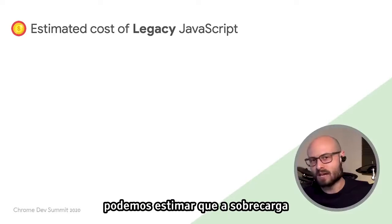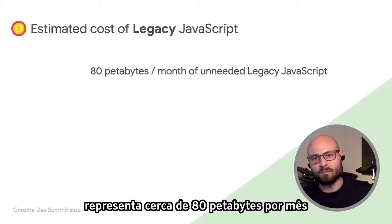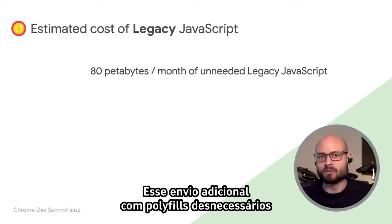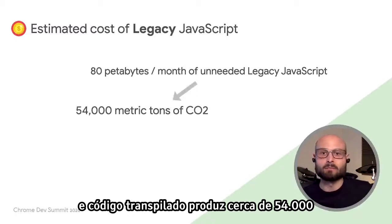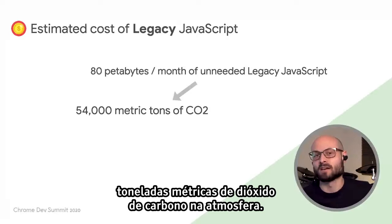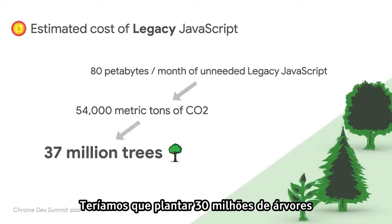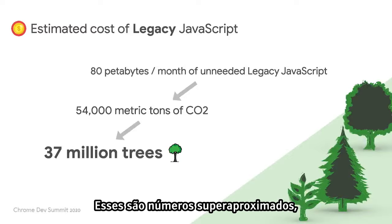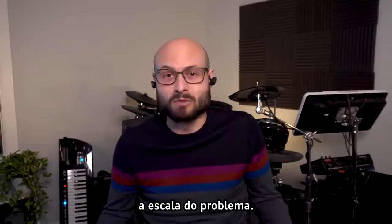Working back from global web traffic, we can estimate that the overhead of shipping legacy JavaScript accounts for around 80 petabytes per month of internet bandwidth. That extra bandwidth — shipping unnecessarily polyfilled and transpiled code — produces something like 54,000 metric tons of carbon dioxide into the atmosphere. We'd have to plant 30 million trees to offset that much CO2. These are obviously super approximate numbers, but they help paint a picture of the scale of the problem.